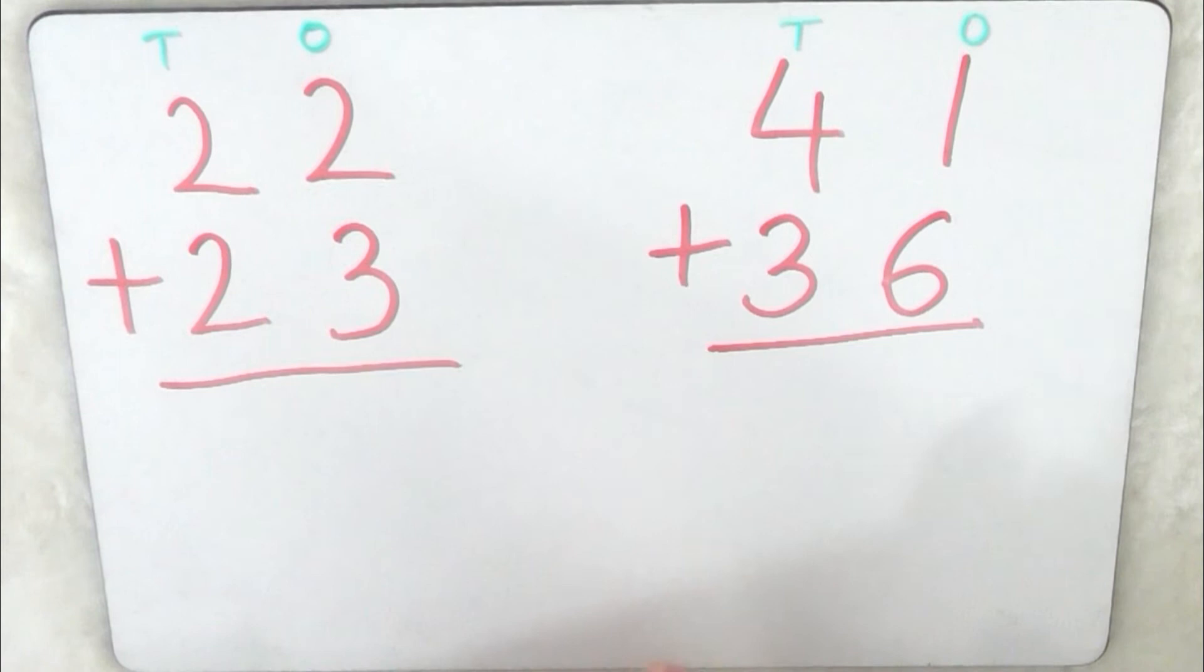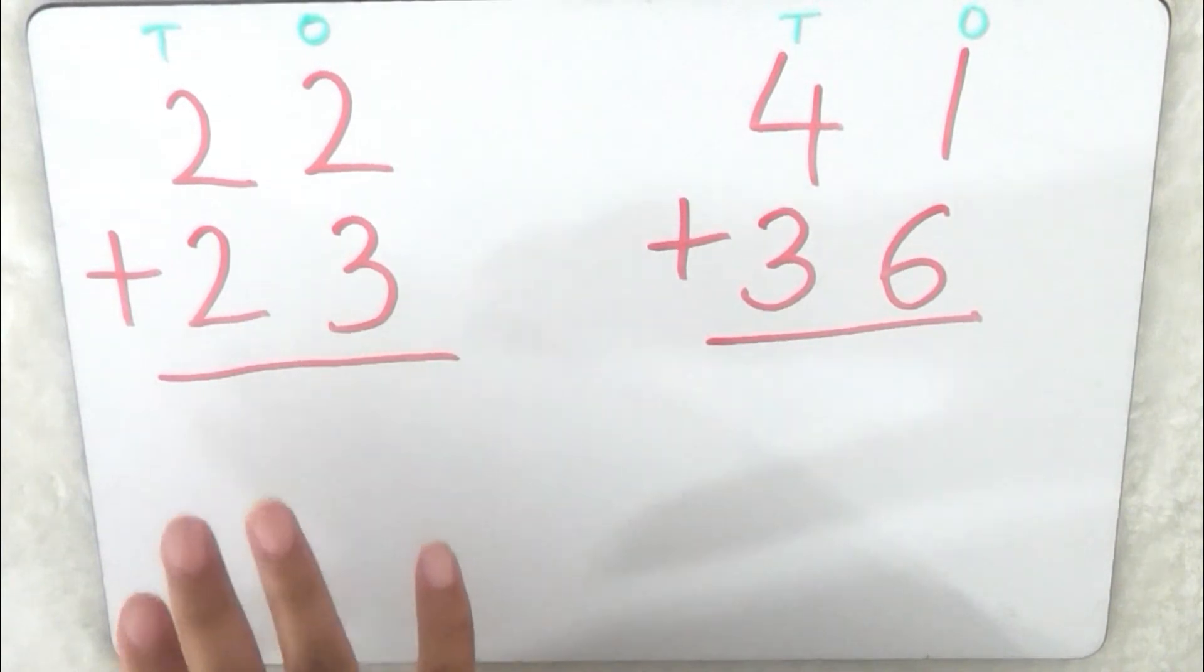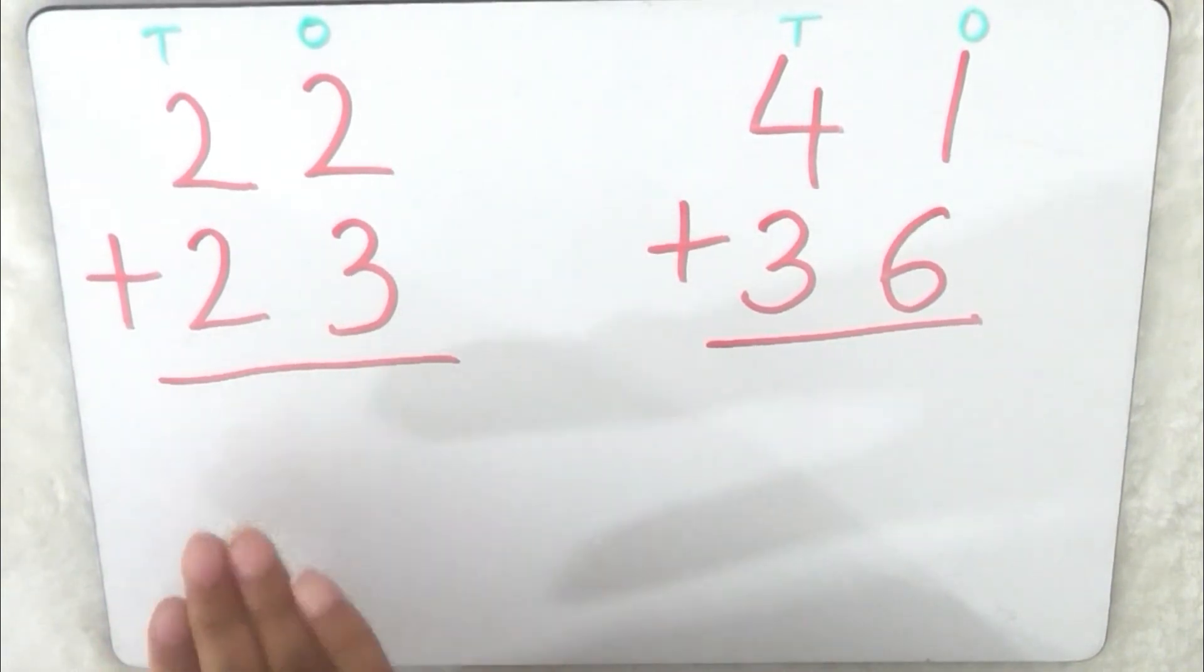Okay so these are the ones that I would like you to try at home. I've labelled the ones and tens for you, so I would like you to try 22 add 23 and 41 add 36. Off you go, I'm going to give you some time to do that.